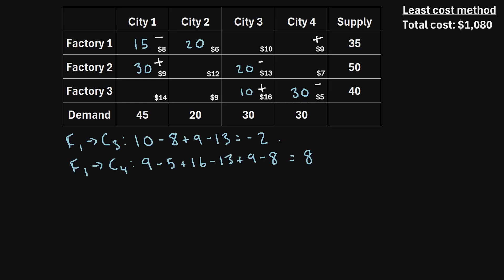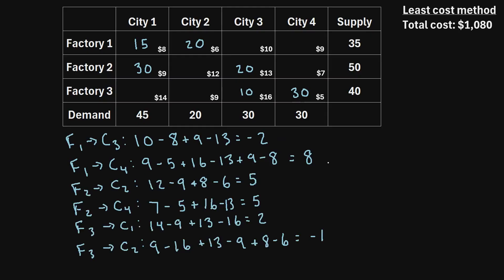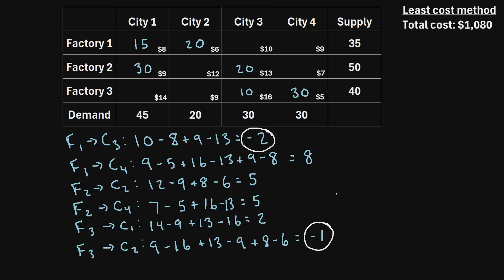After forming a closed loop for each unallocated cell, we look at all of the resulting values and ask: are there any negative values? We can see there are — two negative values. This tells us we have not reached the optimal solution. To work toward the optimal solution, we pick the largest negative value, which corresponds to factory one to city three, and focus on that cell.